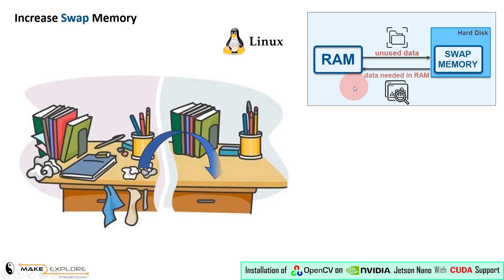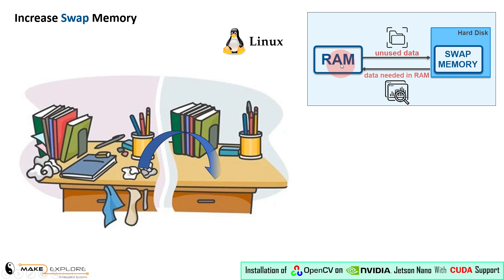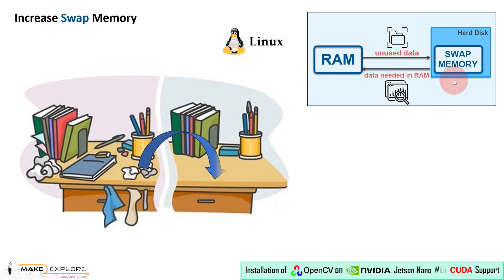Swap memory is a reserved space on the hard drive where the computer can move less important tasks to free up RAM space. When RAM is full, the computer swaps less important data to this reserved space, allowing more important tasks to use the RAM. This helps prevent the computer from crashing or slowing down too much. In short, swap memory is like a temporary storage area that helps your computer manage its memory and keep running smoothly.